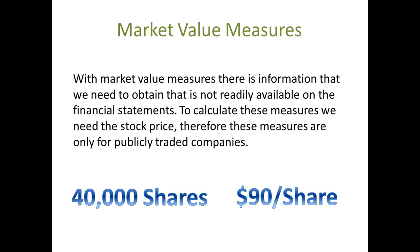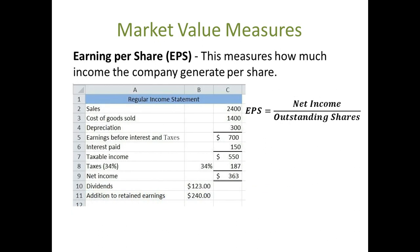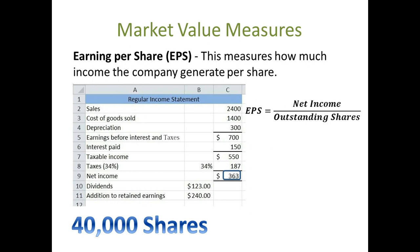Earnings per share, also known as EPS. This measure is exactly what it says — how much income does the company generate per share? The EPS is calculated as net income divided by outstanding shares. For our example, we do $363,000 divided by 40,000, giving us an earnings per share of $9.08. So this company earns $9.08 for every share of outstanding stock.